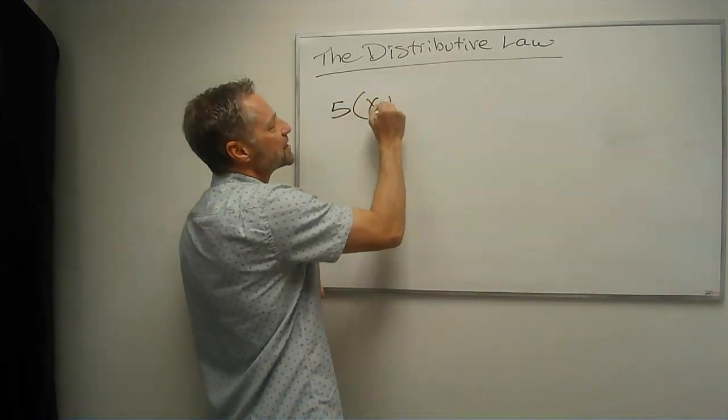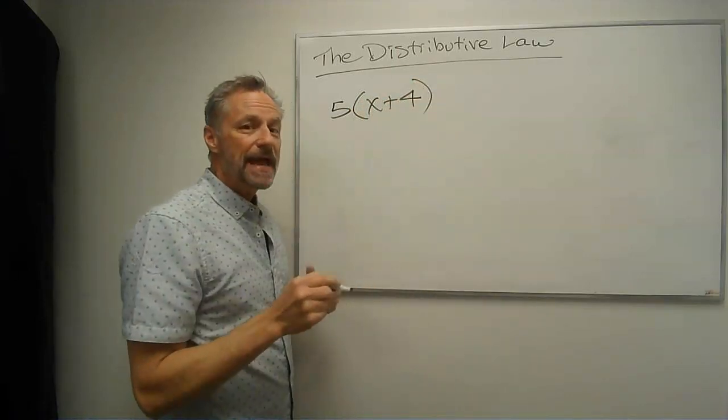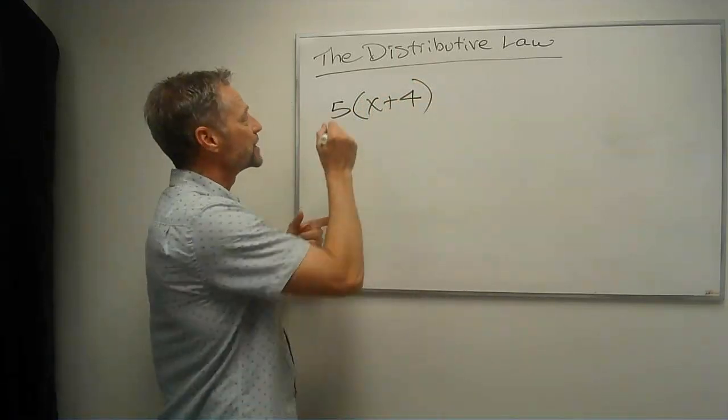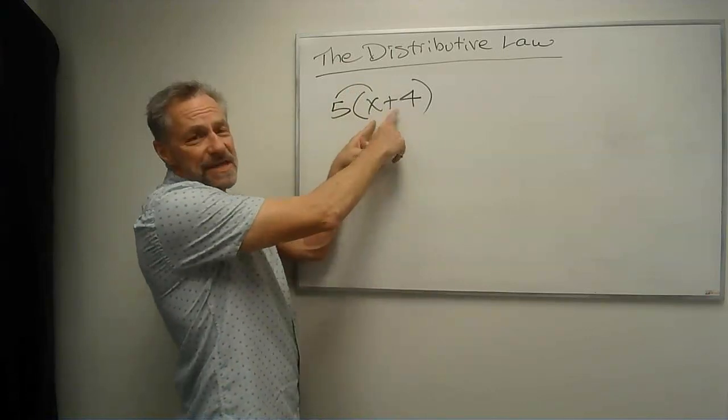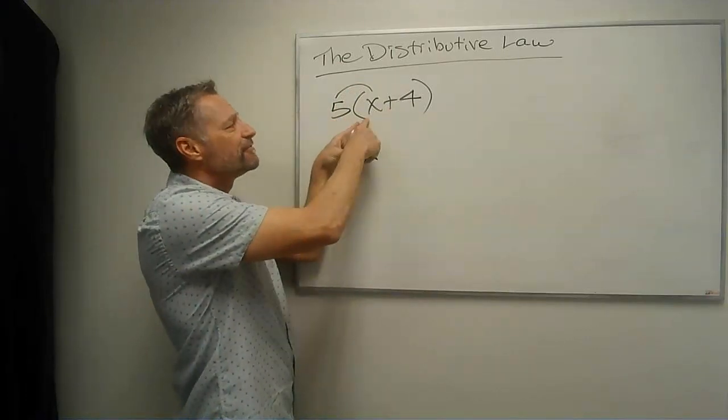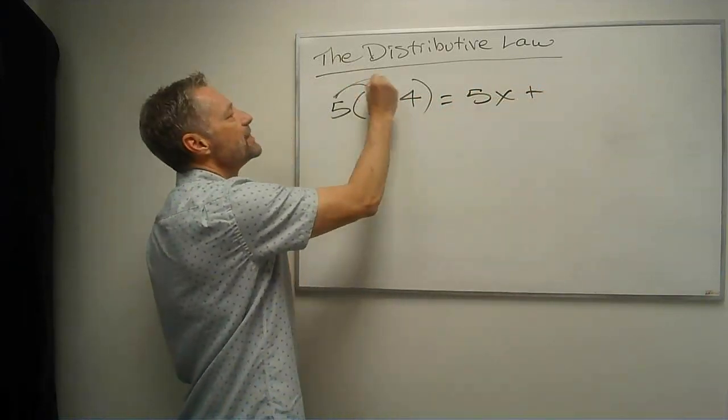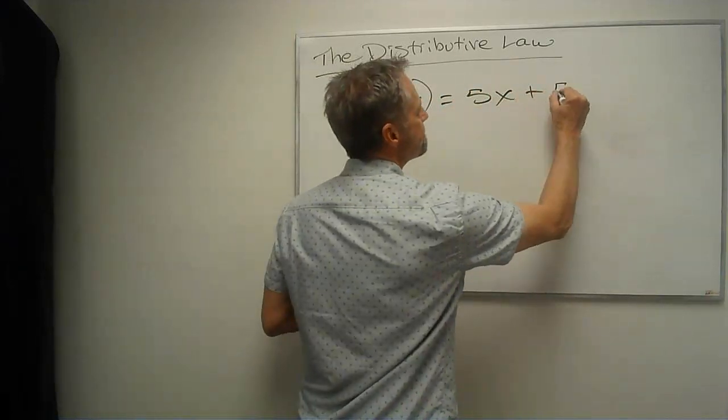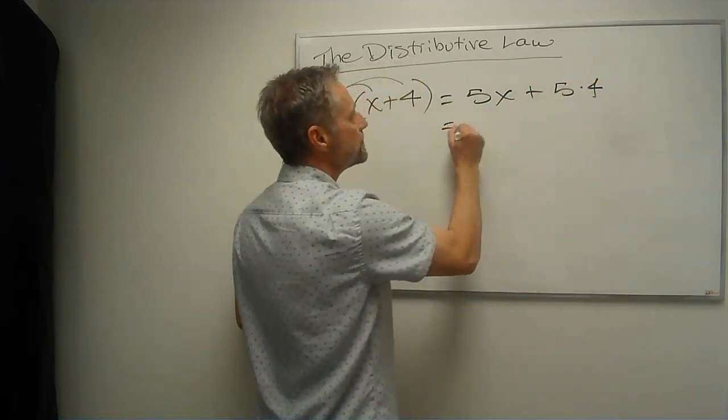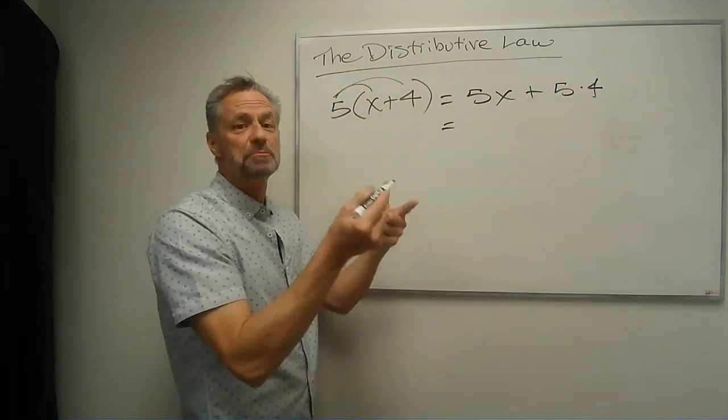See, we have 5 times x plus 4. And then the distributive property is going to say, hey, we can't add the x plus 4, but we can distribute the 5 in, and we'll get 5 times x plus, and then 5 times 4.